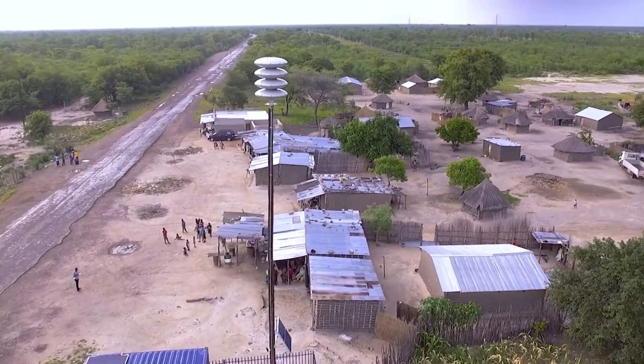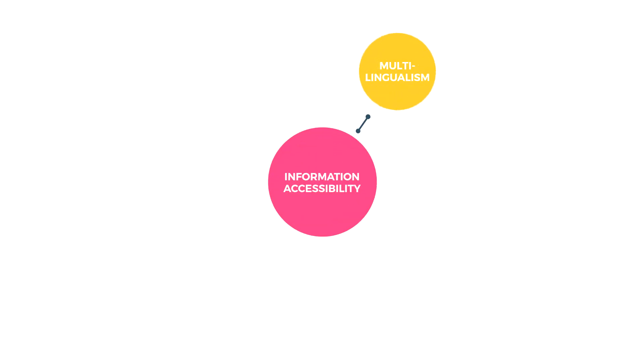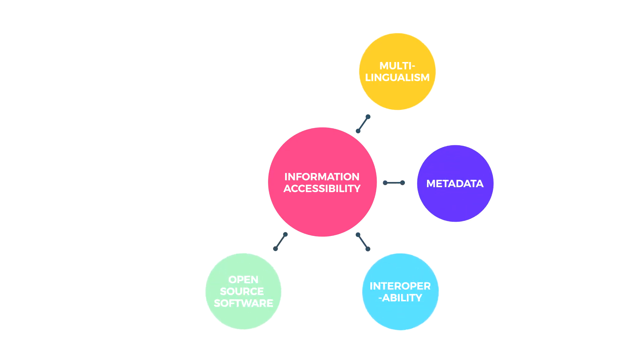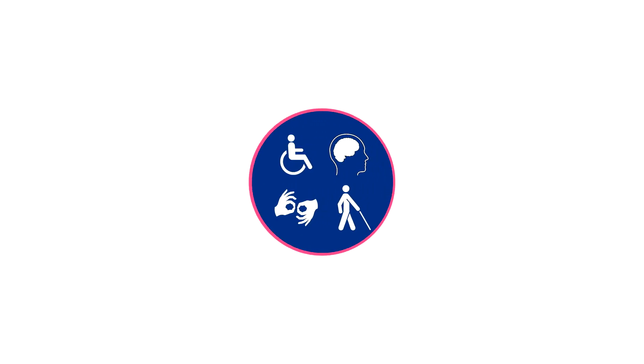Knowledge societies should be inclusive and human-centered. Access to information encompasses the many issues surrounding availability, accessibility, and affordability, such as multilingualism, metadata, interoperability, open-source software, open content, and creative commons licenses. In particular, information policies must take into account the specific needs of people with disabilities to ensure their full participation in knowledge societies.